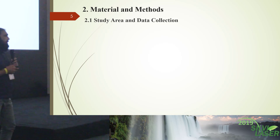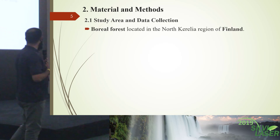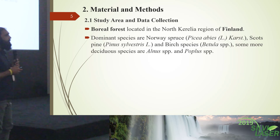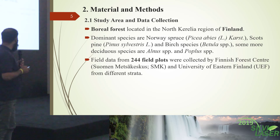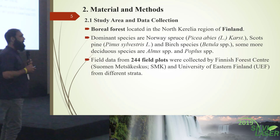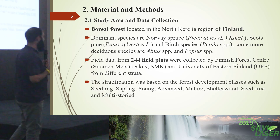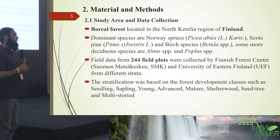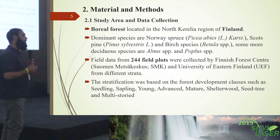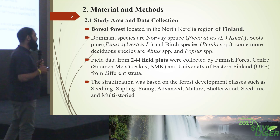The study was conducted in Boreal Forest, Finland. The dominant species are Norway spruce, Scots pine, and birch. We have 244 field plots collected from different stem development classes like seedling, sapling, and advanced mid-stage trees, and multi-storey stands, with approximately equal numbers of field plots collected from each stratum.